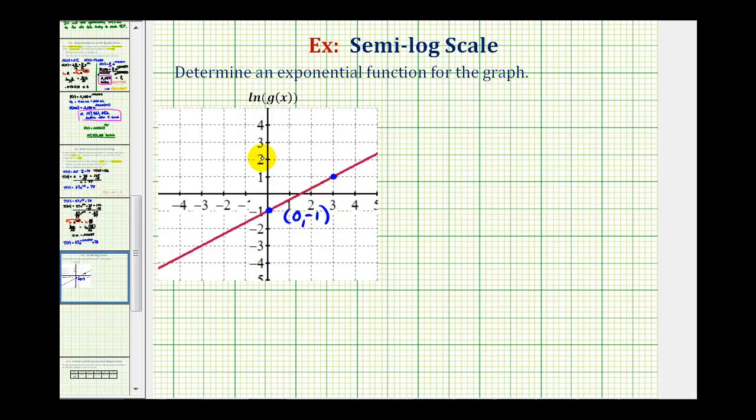Moving from left to right, notice how we have to move up two units—change in y is two—and move right three units, so the change in x is three. Therefore, the slope of this line is two-thirds.